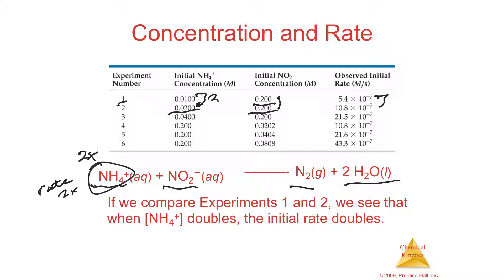And it happens again: if we go to three times the concentration, the rate goes to about 16.2. If you double it and then four-times it, five times four equals the corresponding rate. So as you double the ammonium concentration, the rate doubles; if you multiply it by four, the rate multiplies by four. The rate increases proportionally to the ammonium concentration.